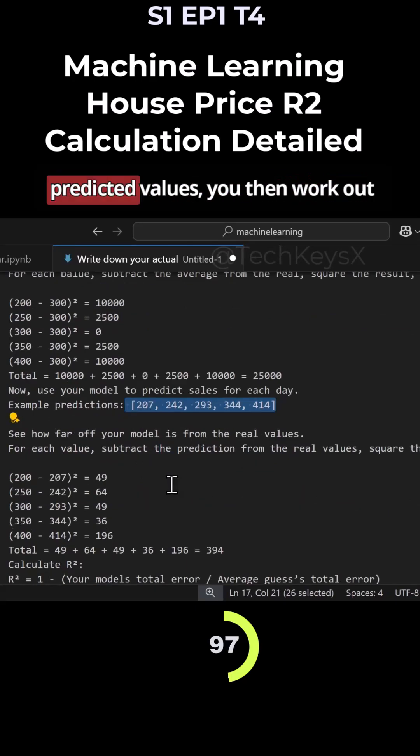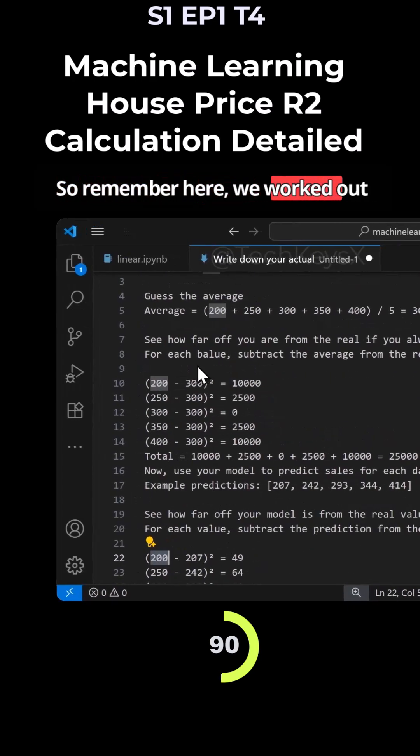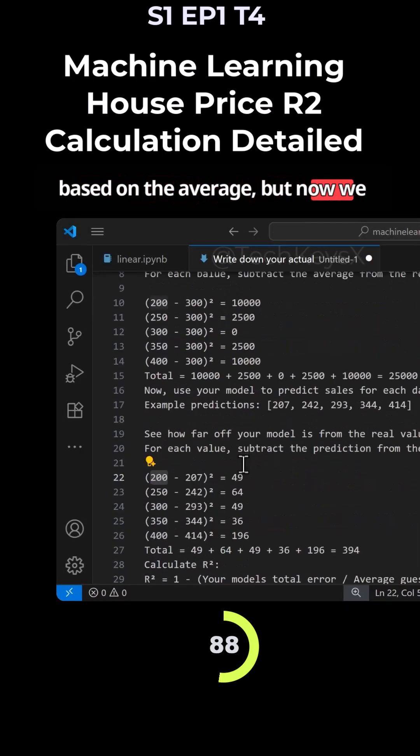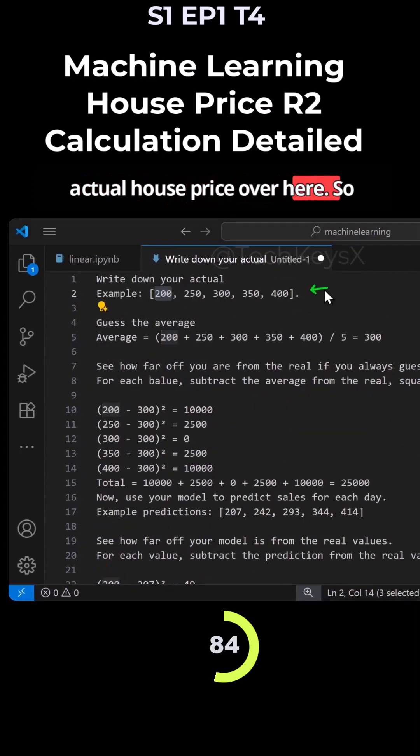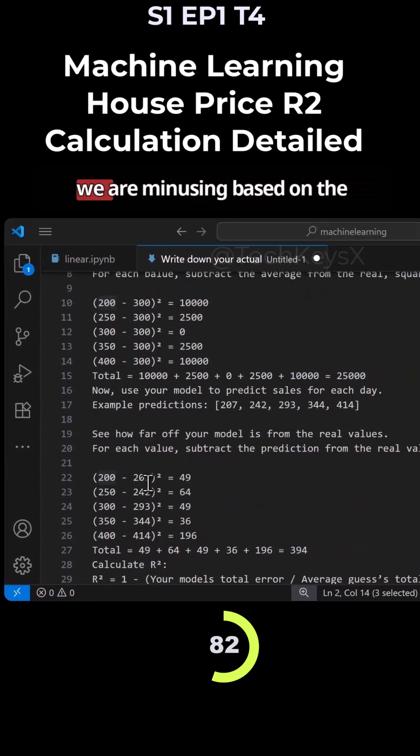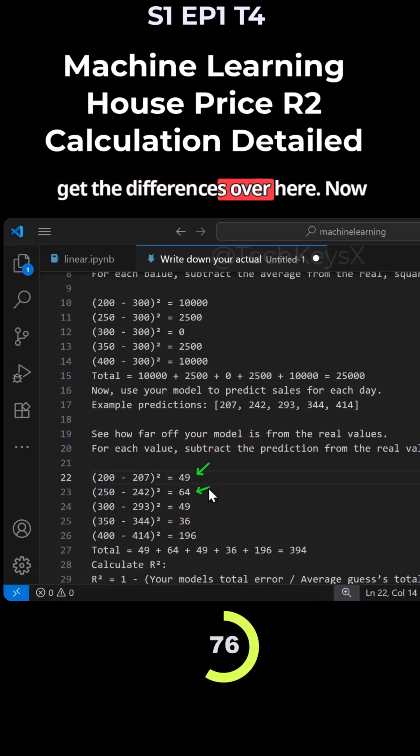So what you do is with the predicted values, you then work out the same thing, which is how far are you off based on the predicted value. So remember here we worked out based on the average, but now we are working out for each of the actual house prices over here. So these are the actual prices and then we are minusing based on the predicted ones over here using the model. So you minus that and you get the differences over here.